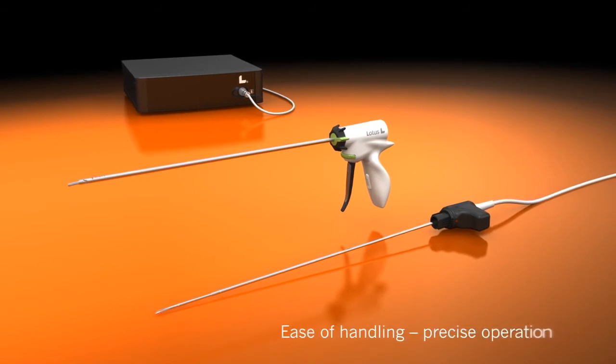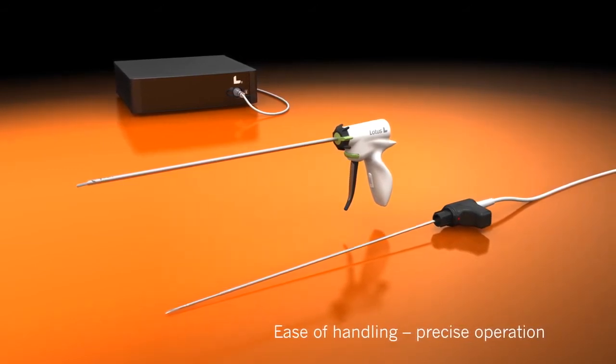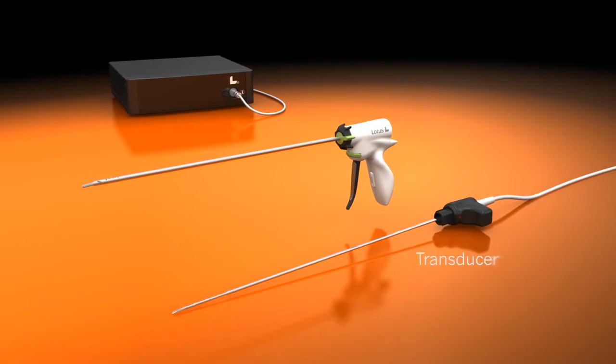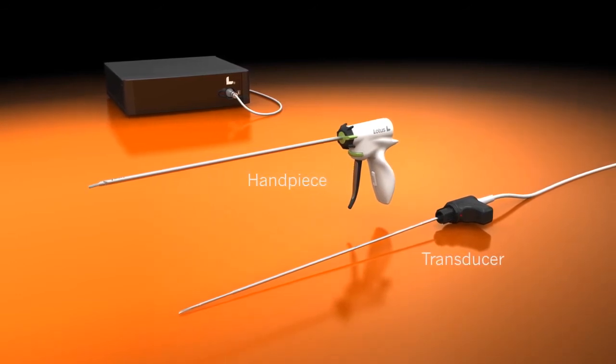The Lotus system stands out with its ease of handling allowing precise operating. The transducer is simply pushed onto the handpiece.